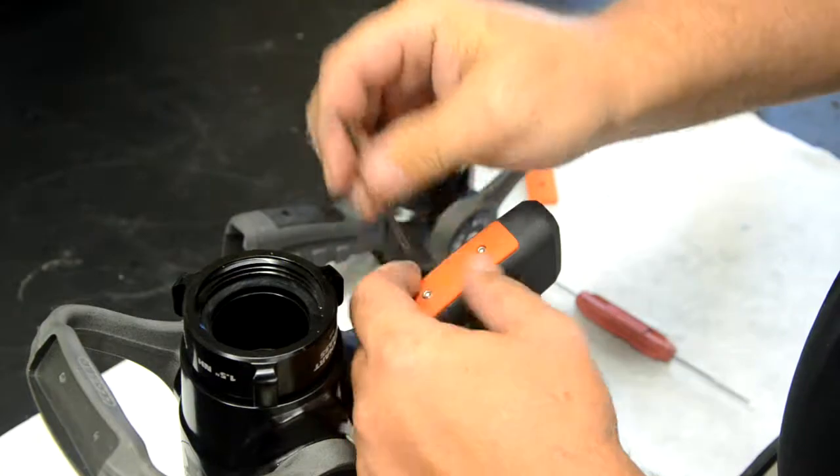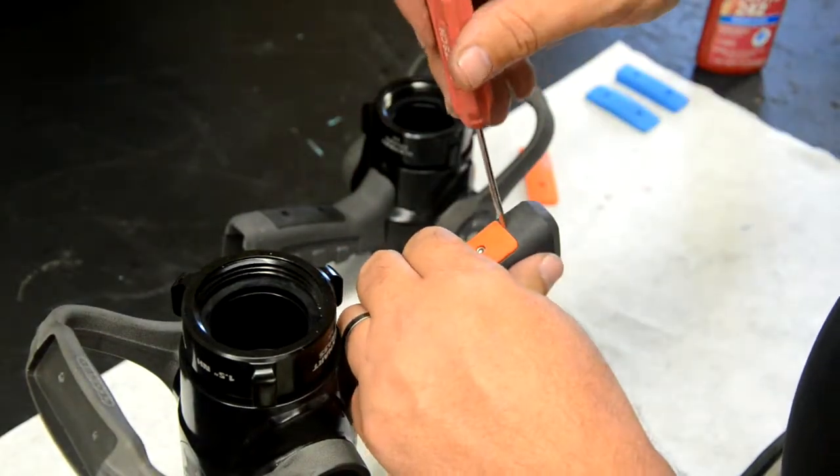Then, using the small screwdriver, gently pry and remove the old inserts from the nozzle.